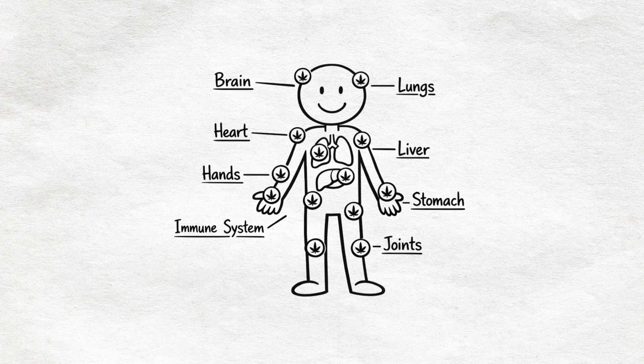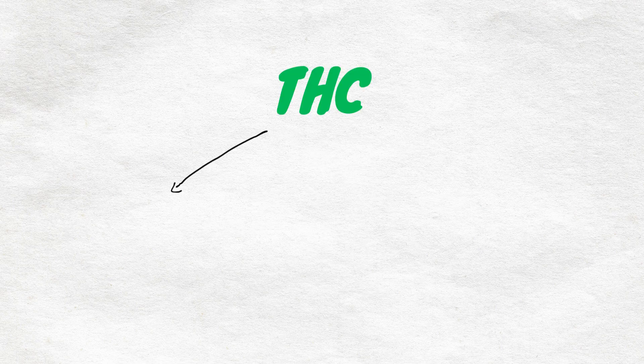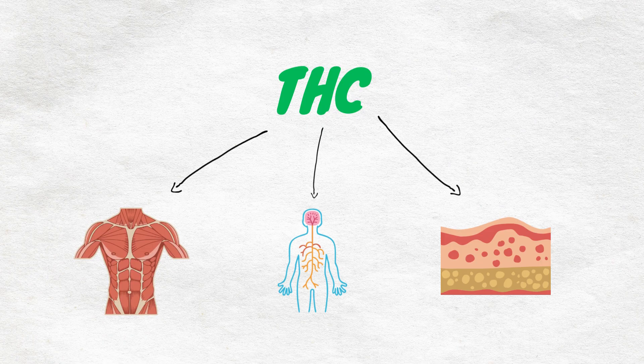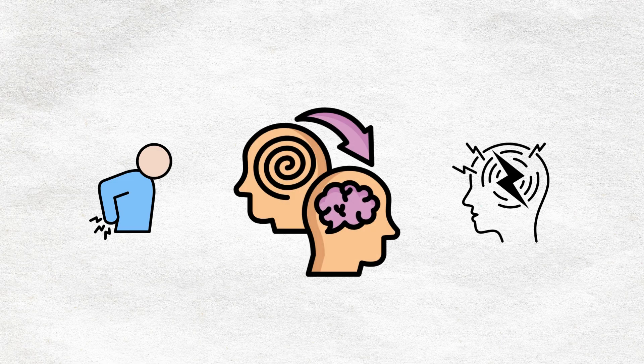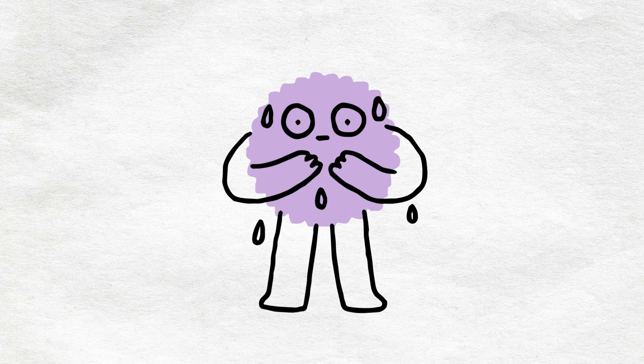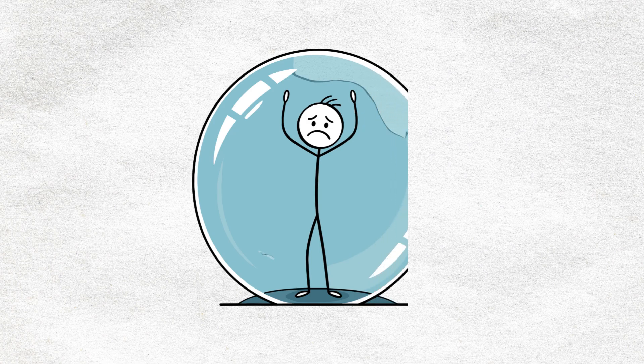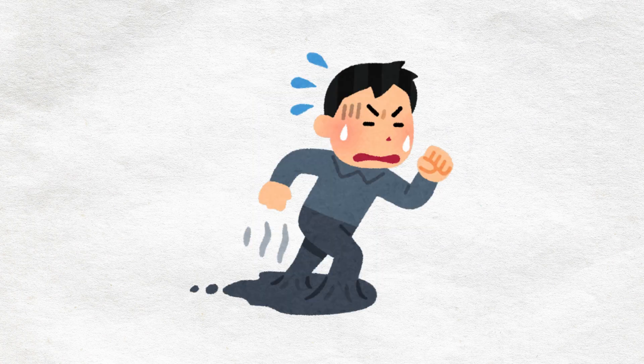This happens because cannabinoid receptors exist throughout your entire body, not just your brain. THC binds to these receptors in your muscles, nerves, and skin, altering how you perceive physical sensation. For people with chronic pain or tension, this can be deeply therapeutic. But it can also be overwhelming. Some users describe being unable to move, physically stuck even when they want to get up. Your body becomes too heavy to obey your mind.